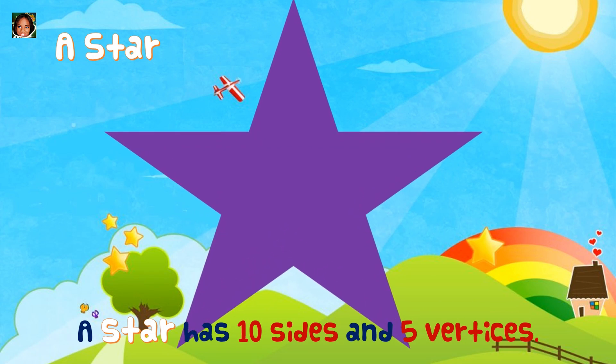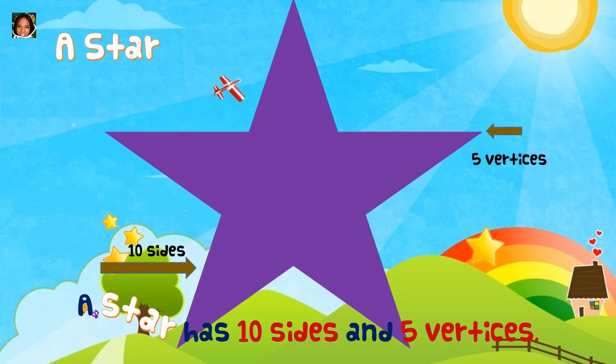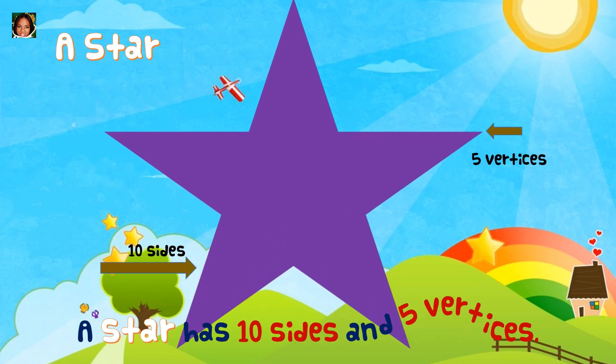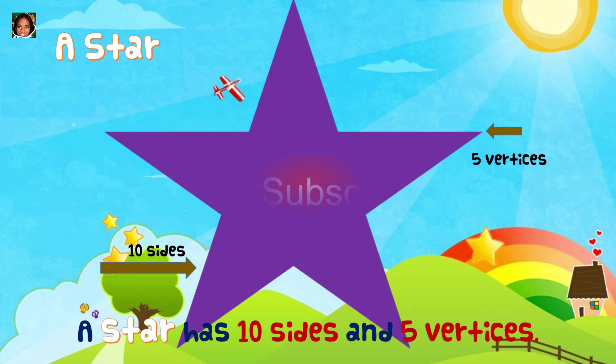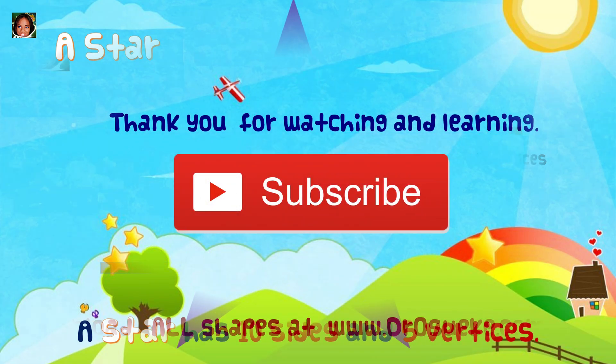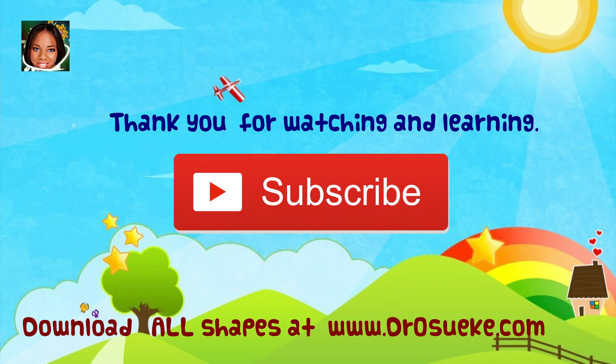Star. A star has ten sides and five vertices.